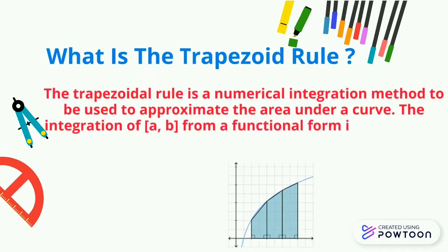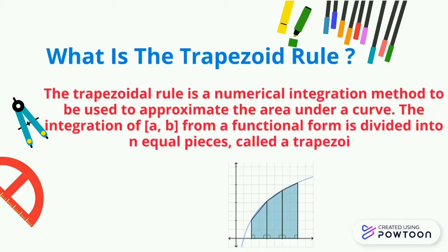The integration from A to B of a functional form is divided into n equal pieces, called trapezoids.